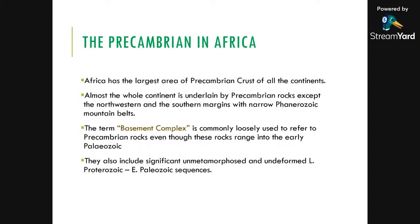Africa has the largest area of Precambrian crust of all the continents in the world. Almost all of Africa is underlain by Precambrian rocks, except in the northwestern and southern margins where you have narrow Phanerozoic mountain belts. The mountain belts in the northwestern part of Africa belong to what is known as the Atlas Mountains of Morocco, extending into Tunisia, and are part of the whole Alpine orogenic system in Europe and all the way into the Himalayas in Asia.